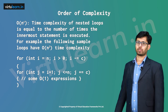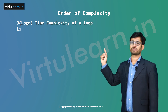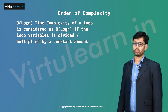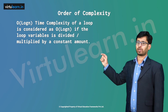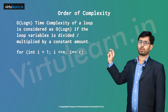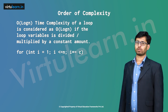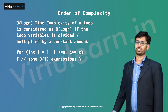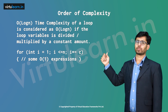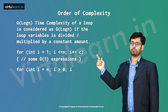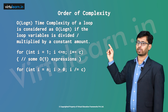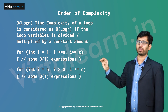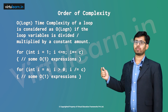Next is O(log n). The time complexity of a loop is O(log n) if the loop variable is divided or multiplied by a constant amount. For example: for(int i = 1; i <= n; i *= c), meaning i = i * c, with O(1) expressions inside. In the division case: for(int i = n; i > 0; i /= c), meaning i = i / c. Whenever we divide or multiply by a constant, the time complexity is O(log n).